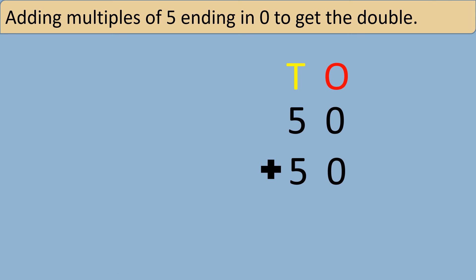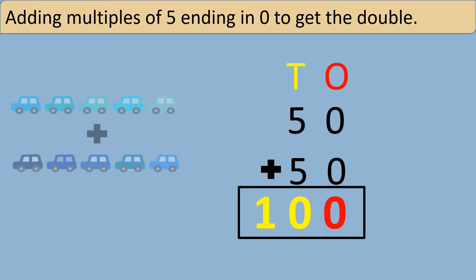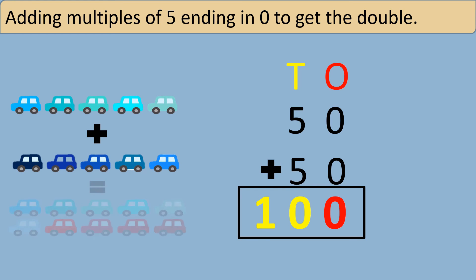Let's find the double of 50. I grouped the numbers into ones and tens. By adding the ones we get 0, and by adding the tens we get 10, because we know that 5 plus 5 equals 10. So 50 plus 50 equals 100. The double of 50 is 100.